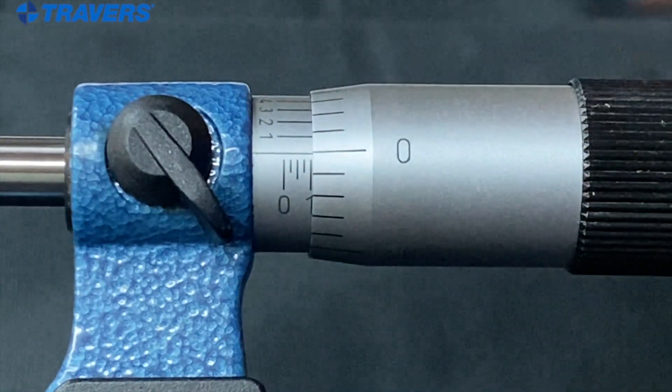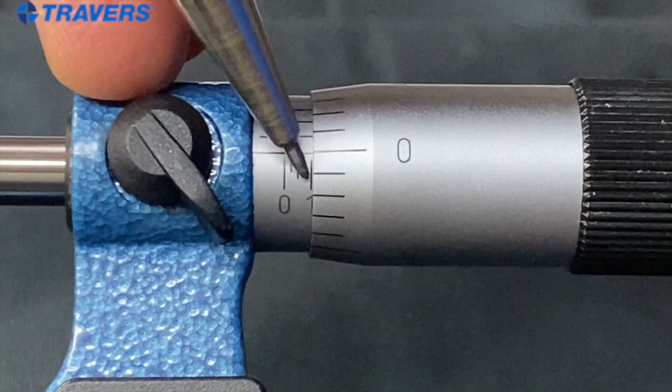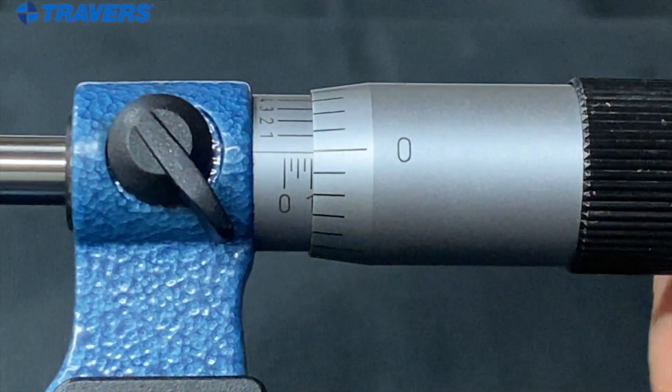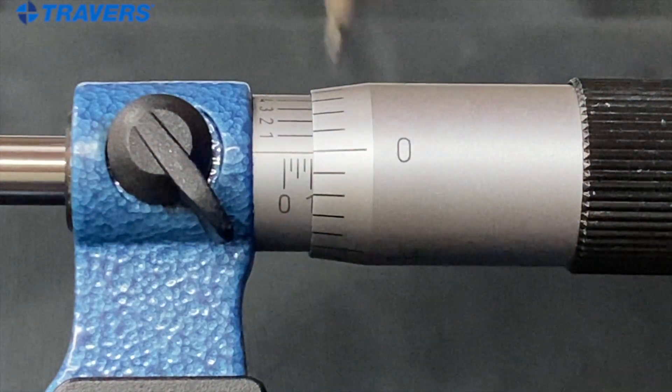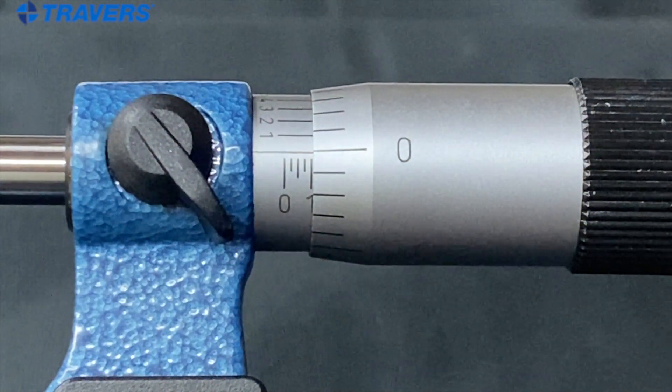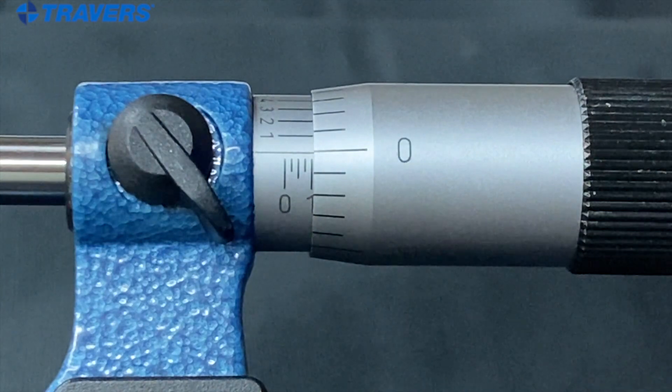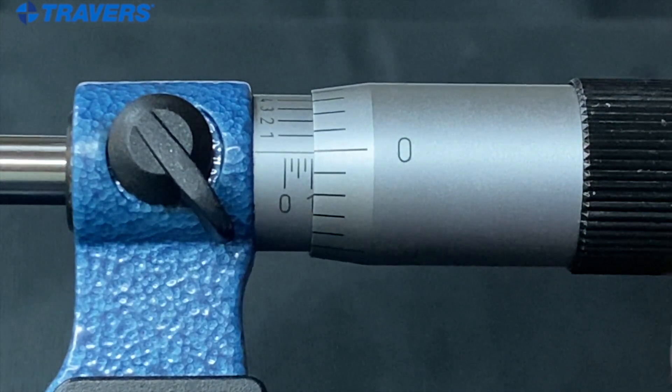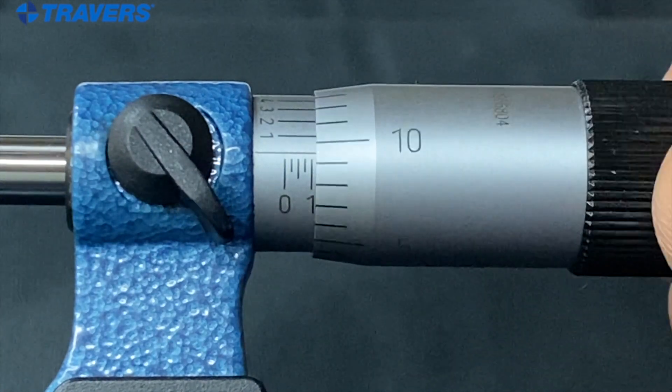And here's a hundred and now you can just see that little number one just sneaking out from behind the thimble. So this measurement is actually one hundred thousandths or one hundred thousandths of an inch. So let's get a little bit more complex now.